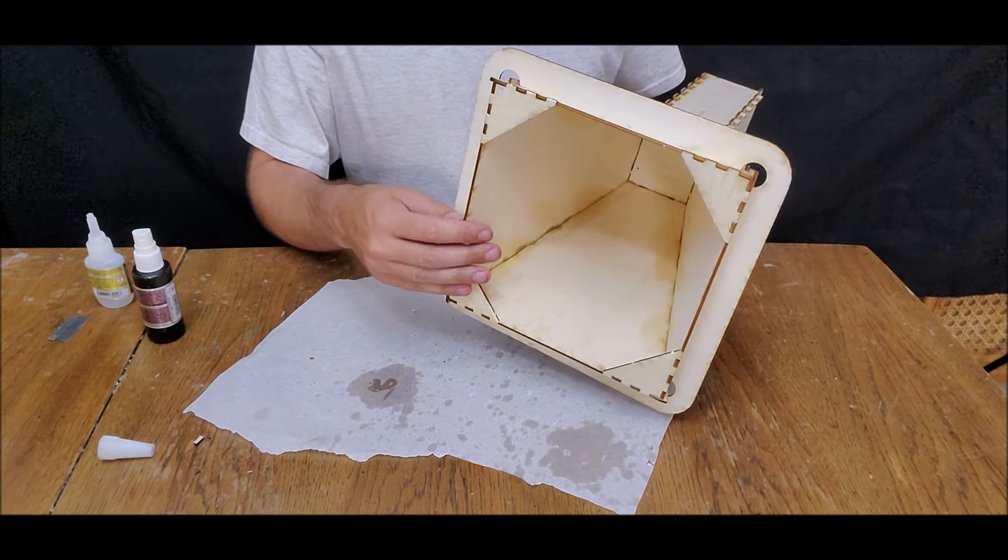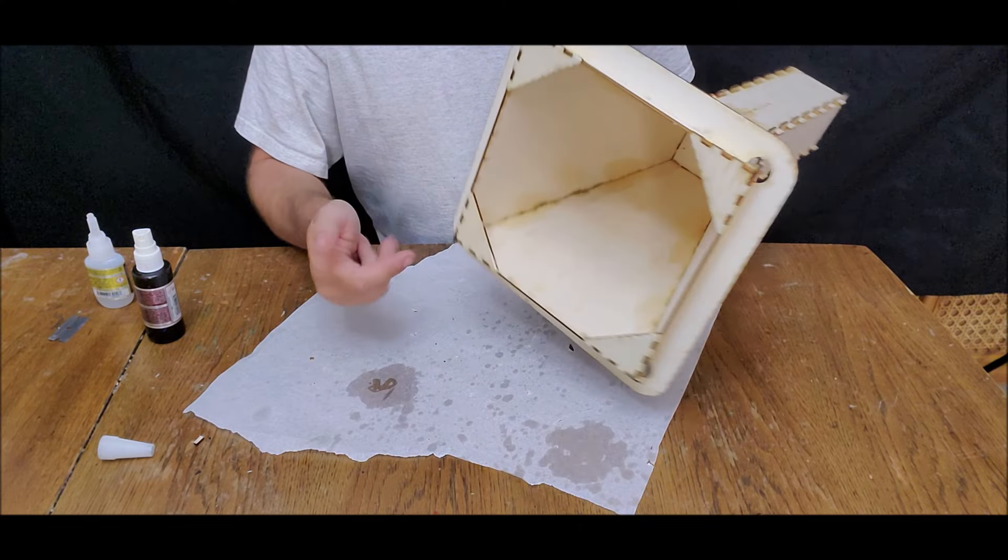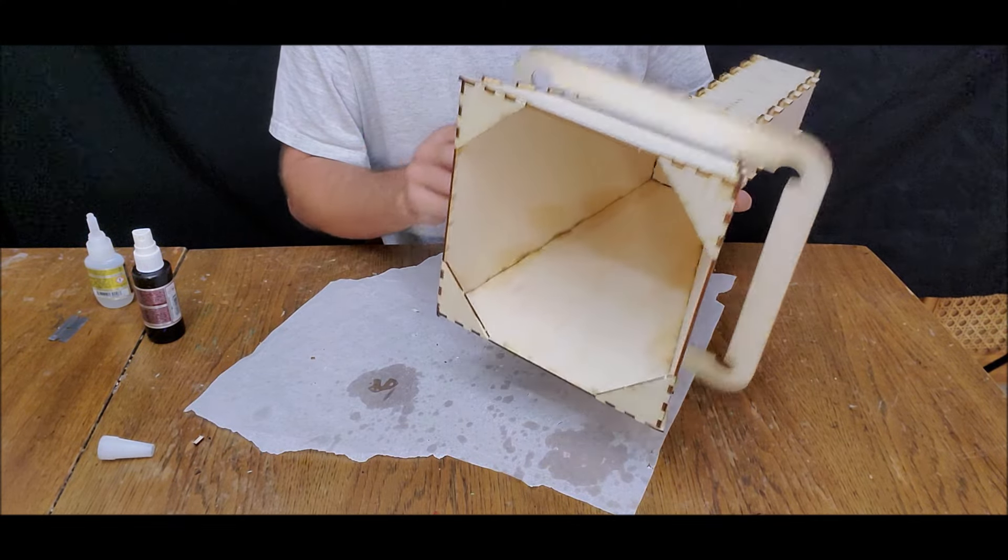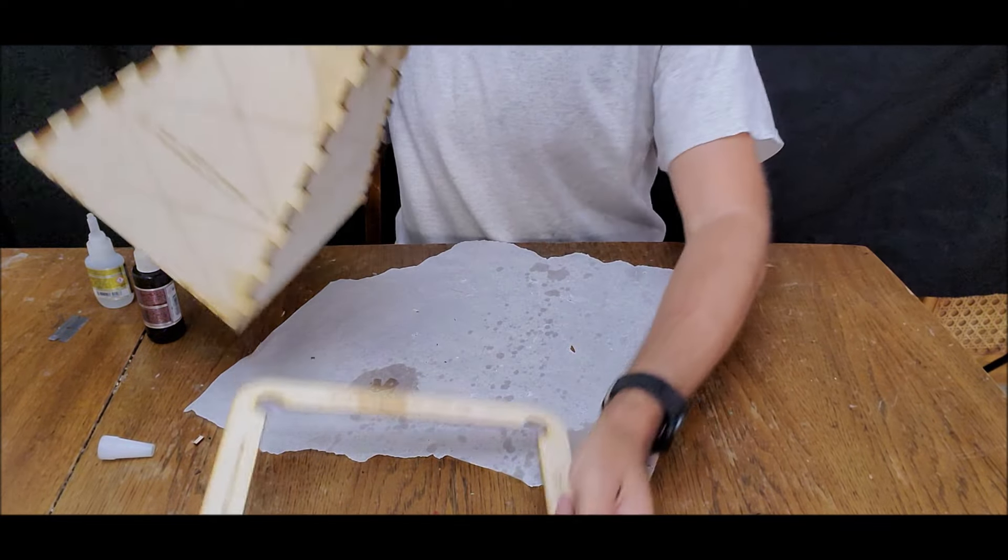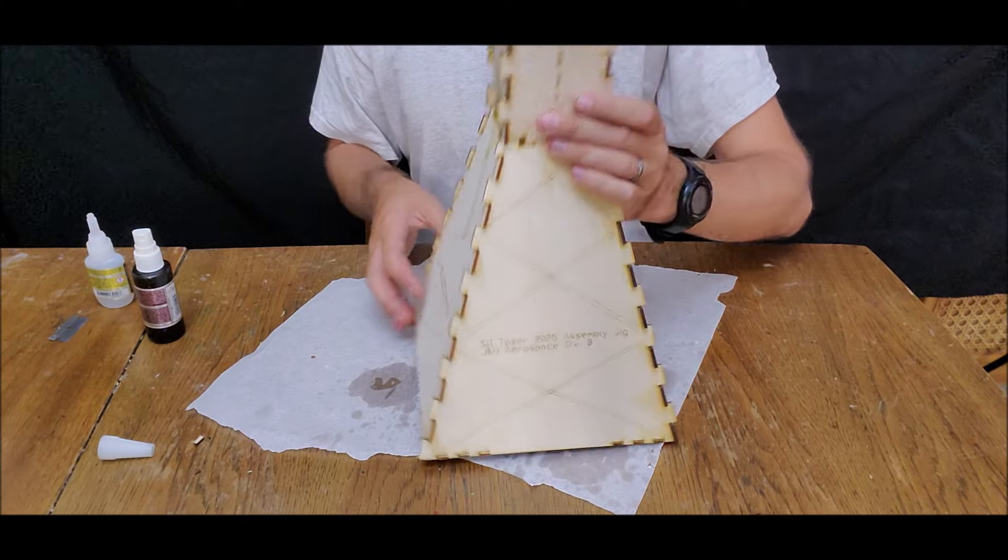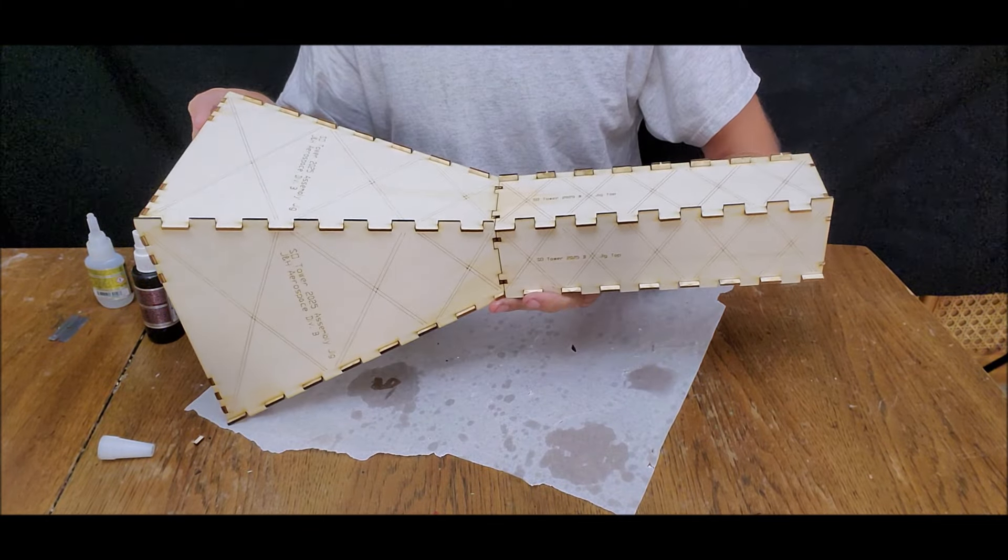OK, so we have all four of those gussets in place. They're glued in. We've hit it with accelerator. Now we can pop this ring gauge off or former, I should say. And we don't actually need it anymore. The assembly is done.